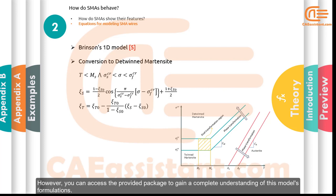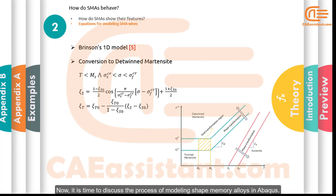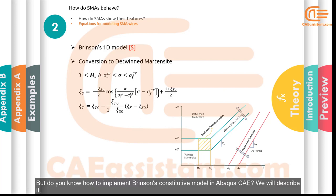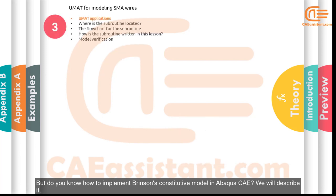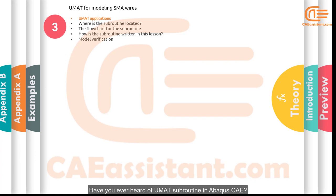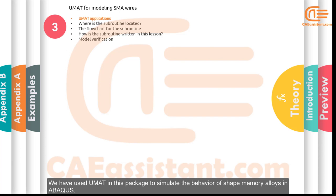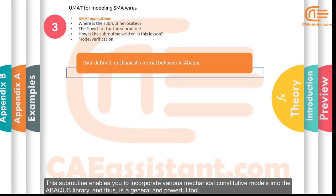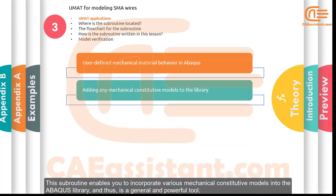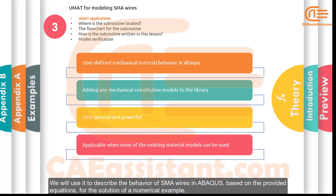That was a brief review of Brinson's model. You can access the provided package for a complete understanding of its formulations. Now it is time to discuss the process of modeling shape memory alloys in Abaqus. We will use the UMAT subroutine to implement Brinson's constitutive model in Abaqus CAE. This subroutine enables you to incorporate various mechanical constitutive models into the Abaqus library, making it a general and powerful tool to describe the behavior of SMA wires.